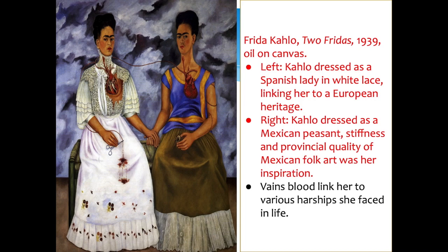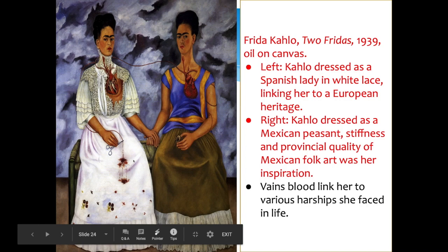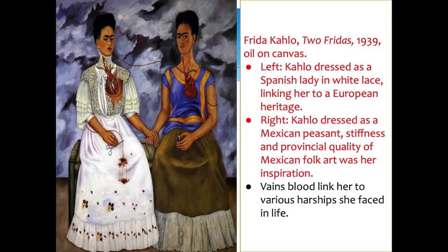Frida Kahlo is one of the most famous female artists of the 1900s. She didn't see herself as a Surrealist — she painted whatever she wanted and resisted classification. In The Two Fridas, on the left she is dressed as a Spanish lady in white lace, linking to her European heritage; on the right she's dressed as a Mexican peasant, reflecting the provincial quality of Mexican folk art that inspired her. Her exposed hearts are the Surrealist element. The scissors cutting the cord and blood on her dress symbolize her many miscarriages and abortions, while a small locket portrait of her ex-husband represents their recent divorce — a painting about loss and dual cultural identity.